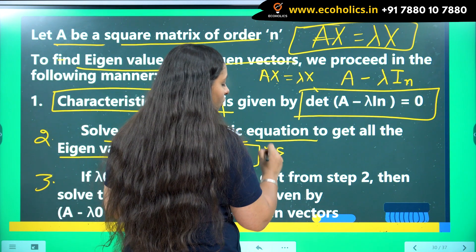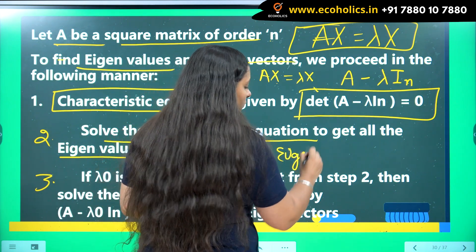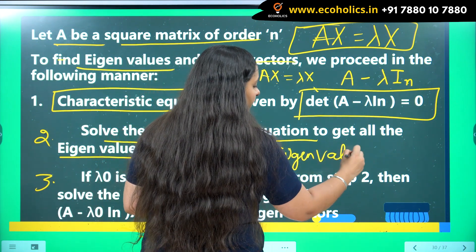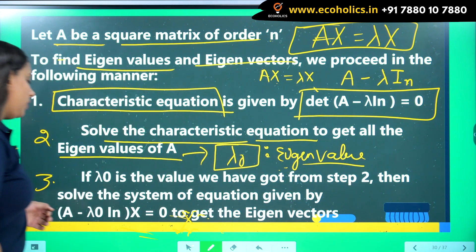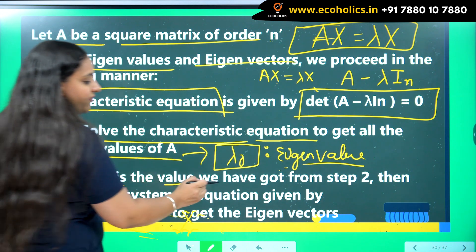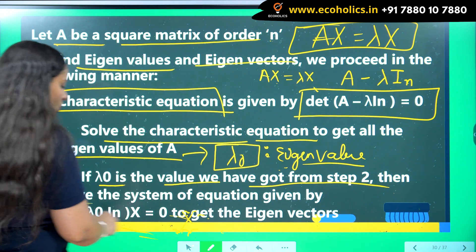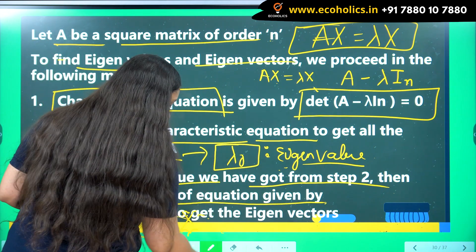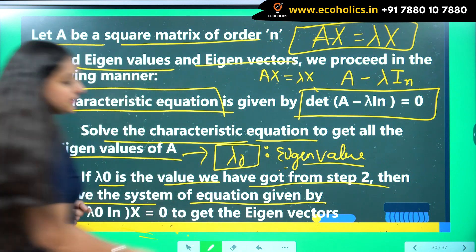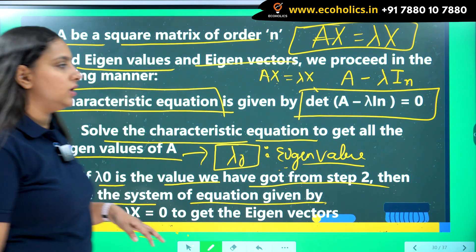Let us say by solving this characteristic equation, we get an eigenvalue equals to lambda naught. So lambda naught is one of your eigenvalue. If lambda naught is the value which we have got from step number 2, then solve the system of equations.